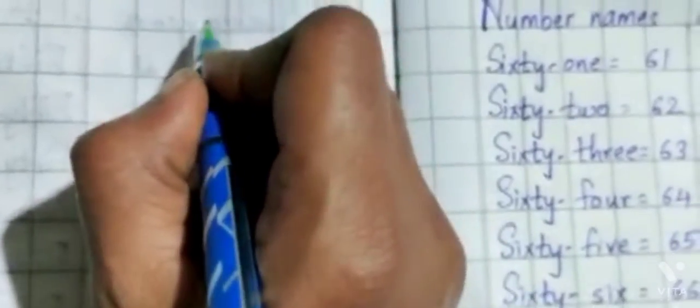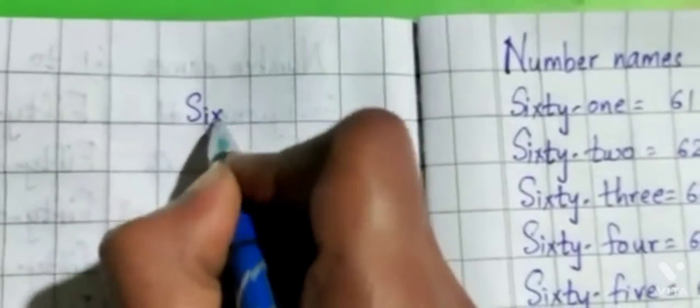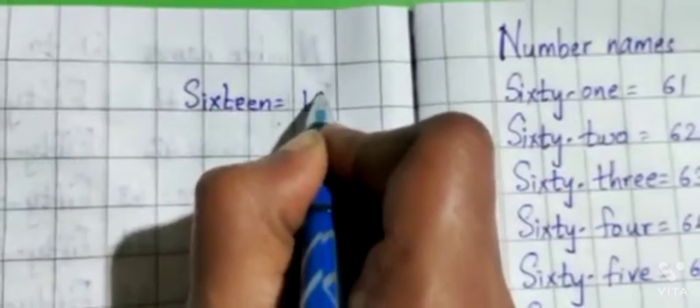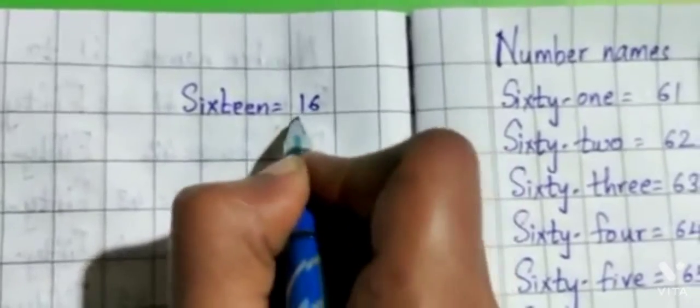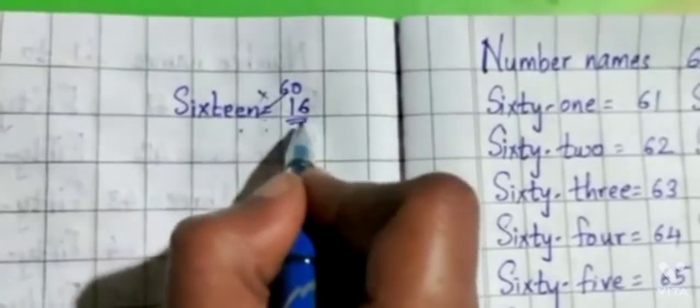Some mistakes children do while writing the spellings of 60, 70, and 80. For 60, some children write sixteen spelling. They write 60 for this, so that's wrong.